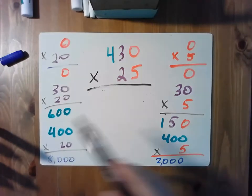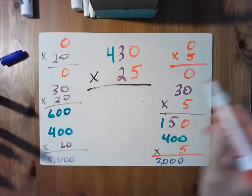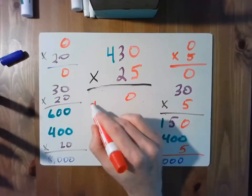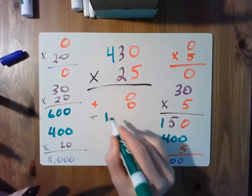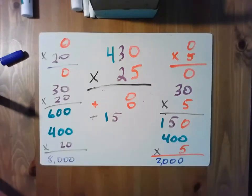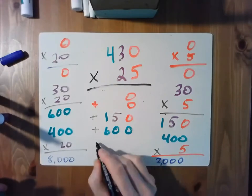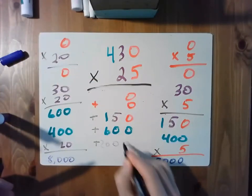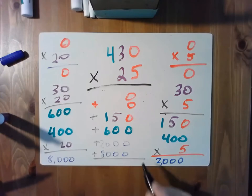So I've multiplied everything, and now I need to add these values up. I have 0 plus 0 plus 150 plus 600 plus 2,000 plus 8,000. That seems like a really big lot of stuff there. But once we add that up, all zeros in the ones column. 0 in the ones column.